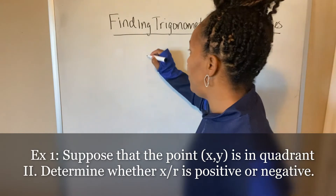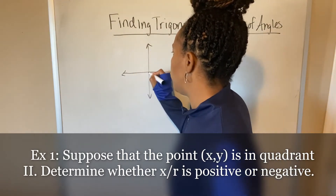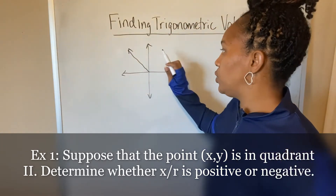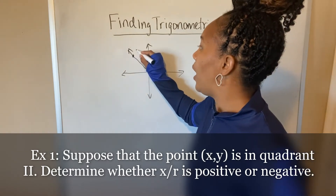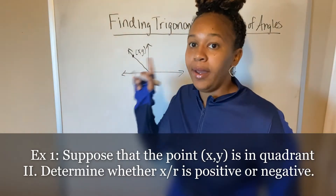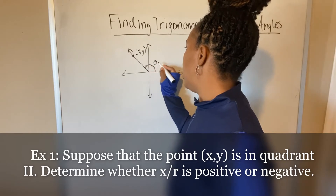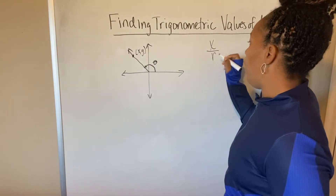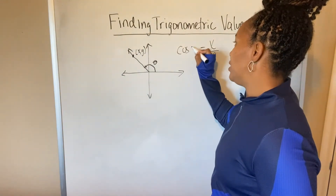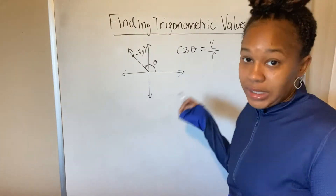Let me sketch a quick angle whose terminal side is in quadrant two. Remember, this is quadrant one, two, three, four. So the point (x, y) is in quadrant two — that means (x, y) is the point on the terminal side of that angle. This is the angle we're referring to. We want to know what is the value of x over r — whether it's positive or negative. Remember, x over r is cosine of theta. So is the cosine of theta positive or negative for this angle?